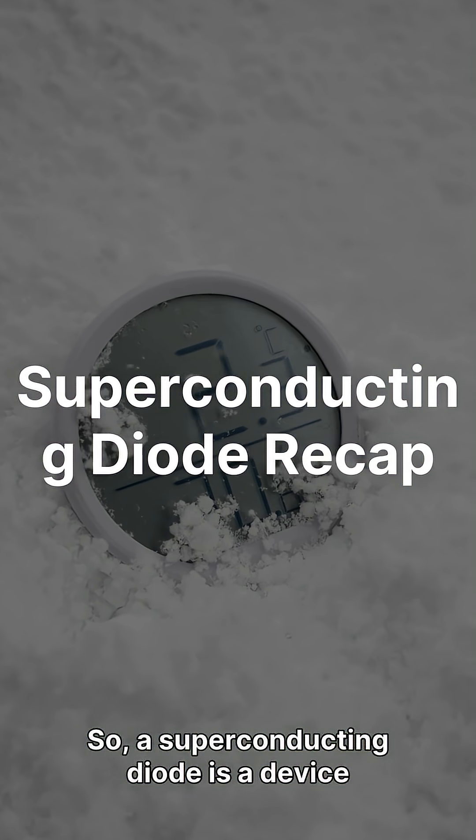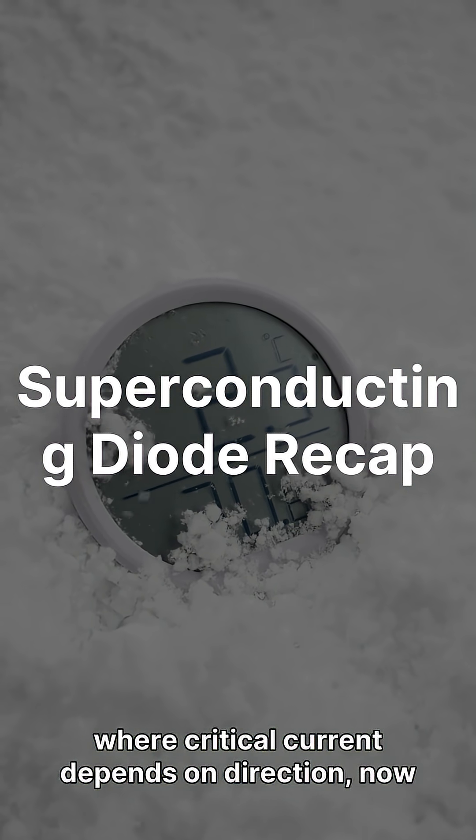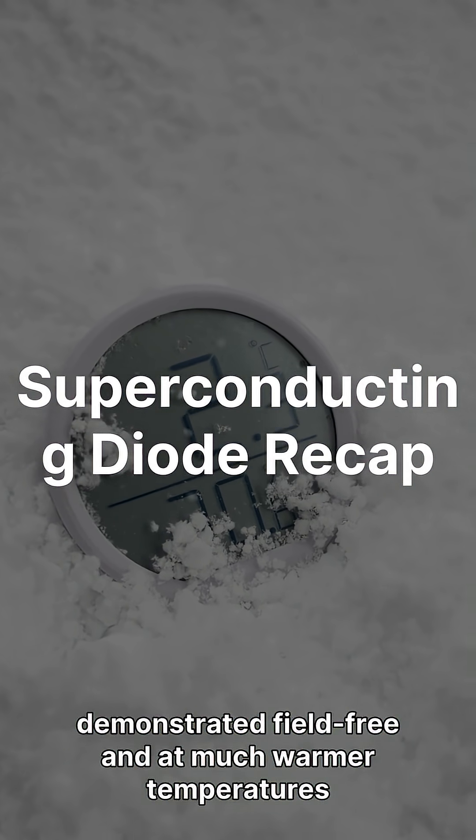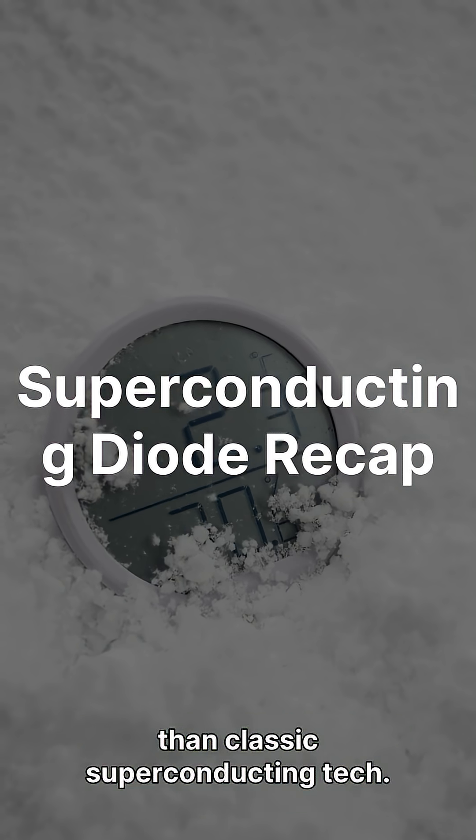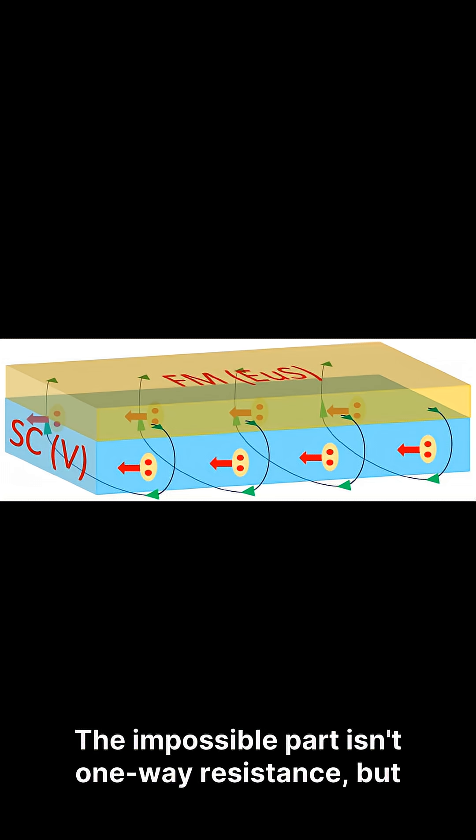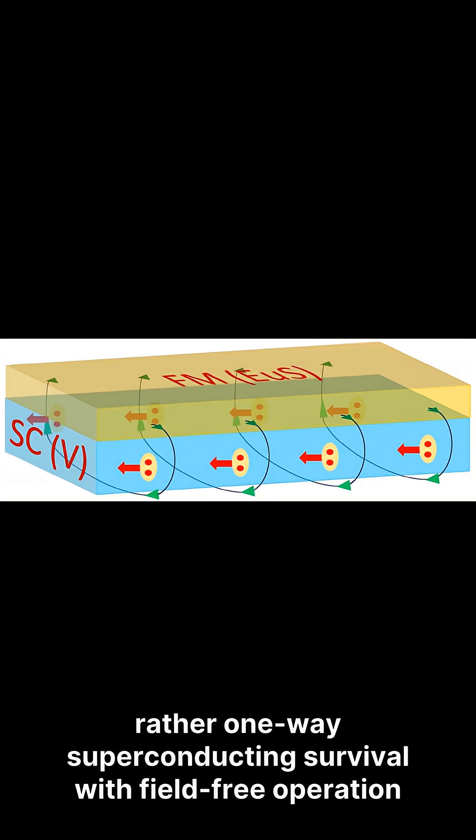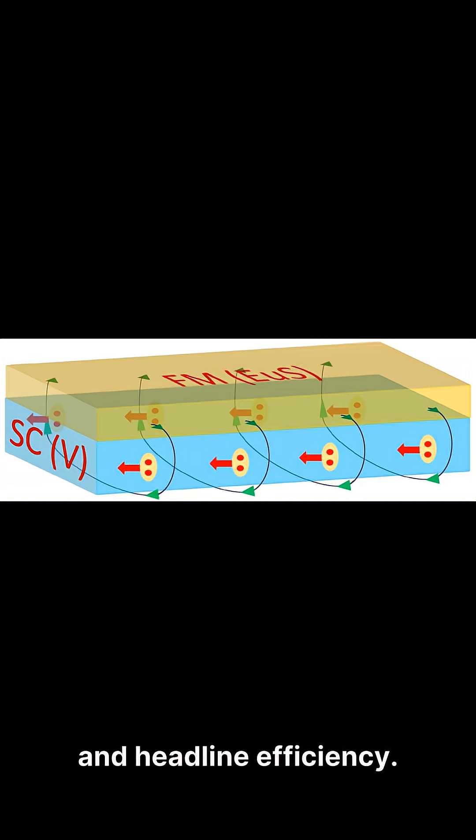So a superconducting diode is a device where critical current depends on direction, now demonstrated field-free and at much warmer temperatures than classic superconducting tech. The impossible part isn't one-way resistance, but rather one-way superconducting survival with field-free operation and headline efficiency.